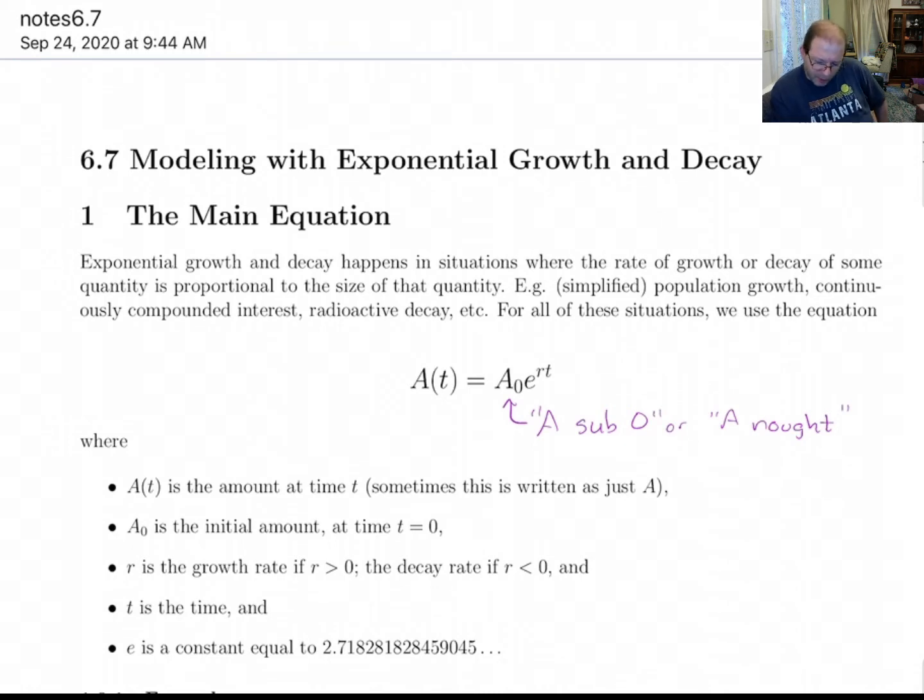A sub 0 is the initial amount at time 0. And one thing about time here, time can be measured in seconds or years or any other thing. So you have to pay attention to the problem to see what our time unit is. r is either the growth rate if it's positive or the decay rate if it's negative, t is time.